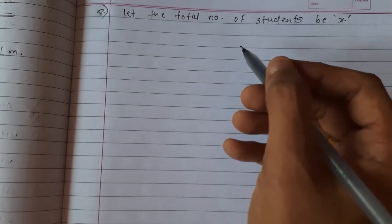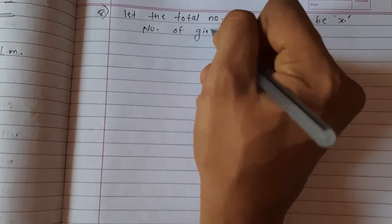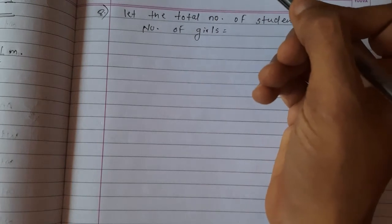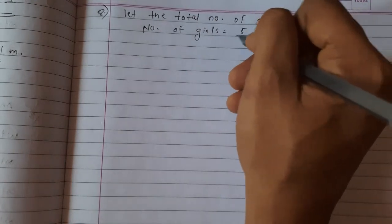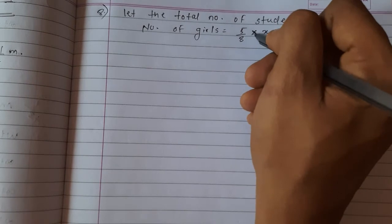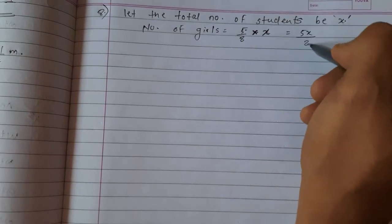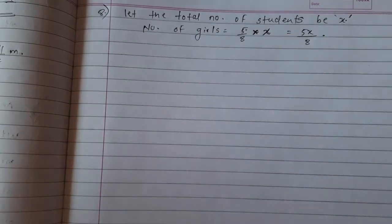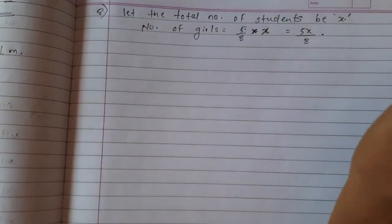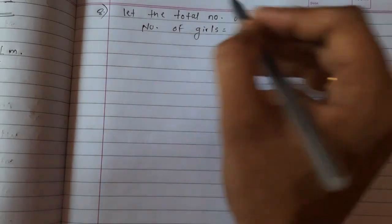In a school, 5 upon 8 of total students are girls. Number of girls are 5 upon 8 of total students. What we have taken? X. So 5 upon 8 of x means 5 upon 8 of means multiplication, and x means total students. So 5 into x is 5x upon 8 girls are present in that school. Now one condition they have given: if the number of girls is 120 more than that of the boys, what is the strength of the school? And how many boys are there in that school? So how to find this?